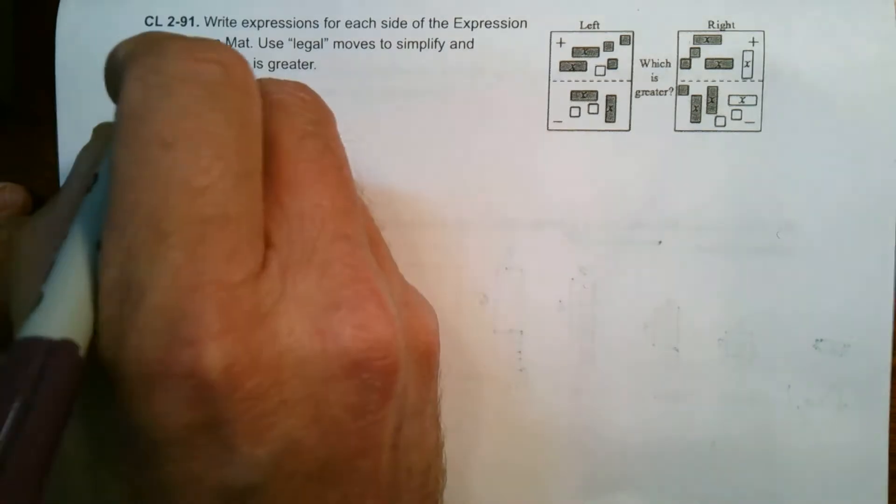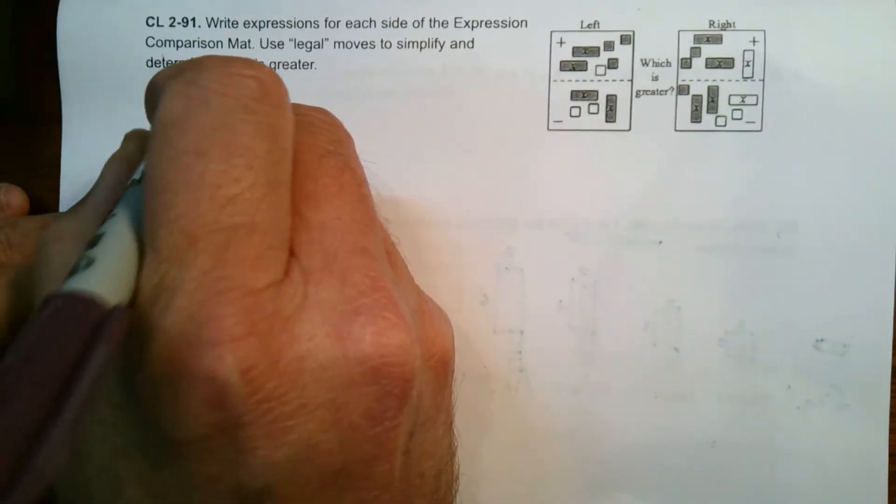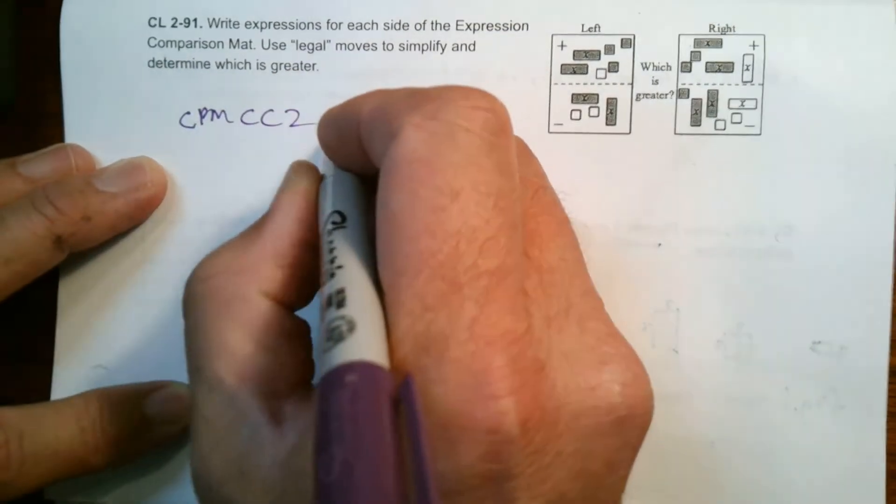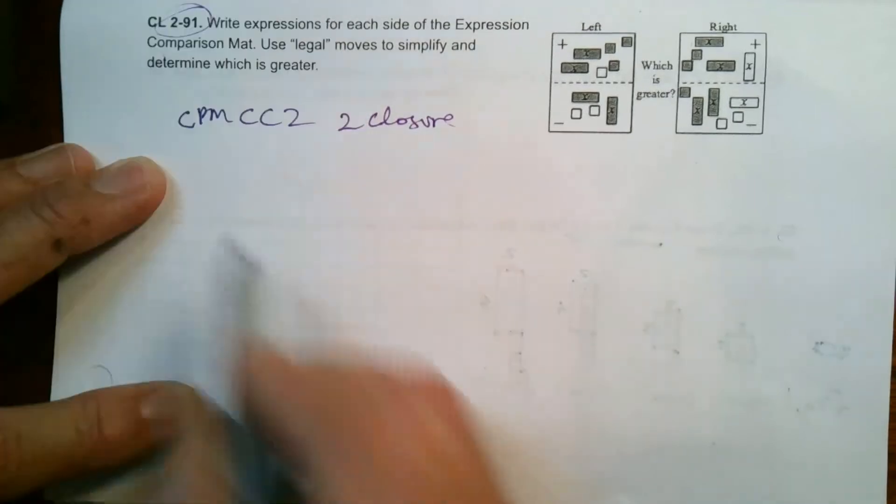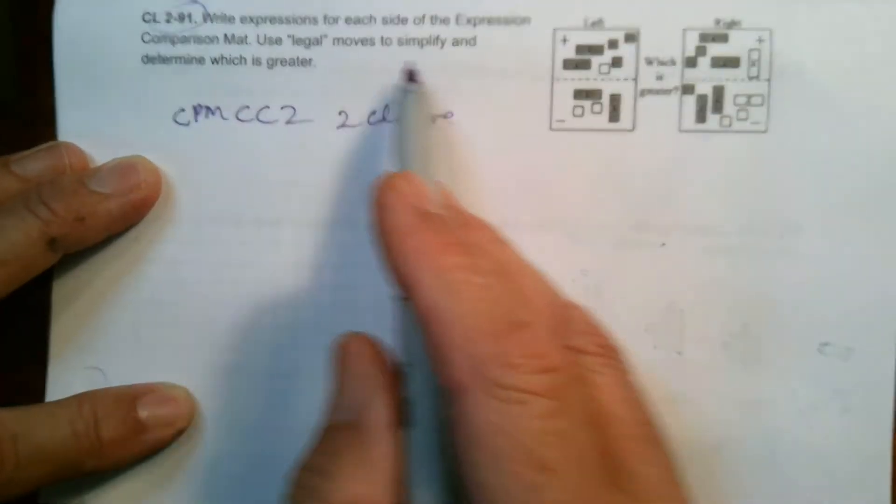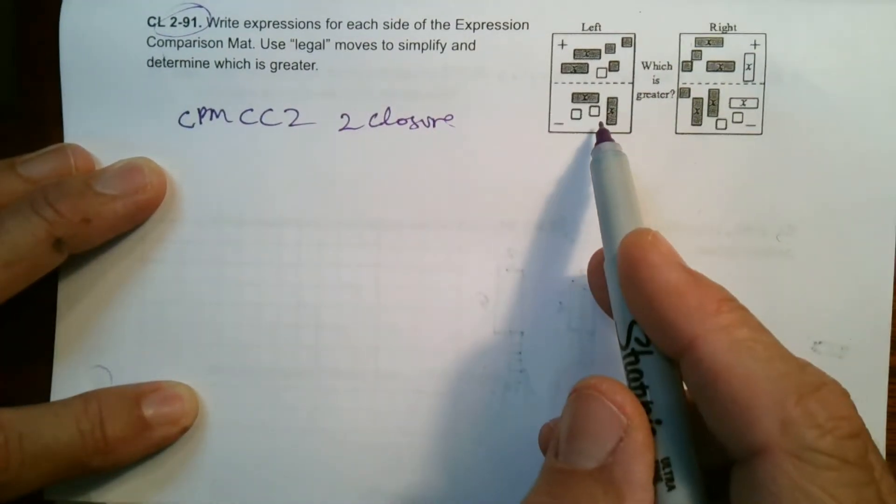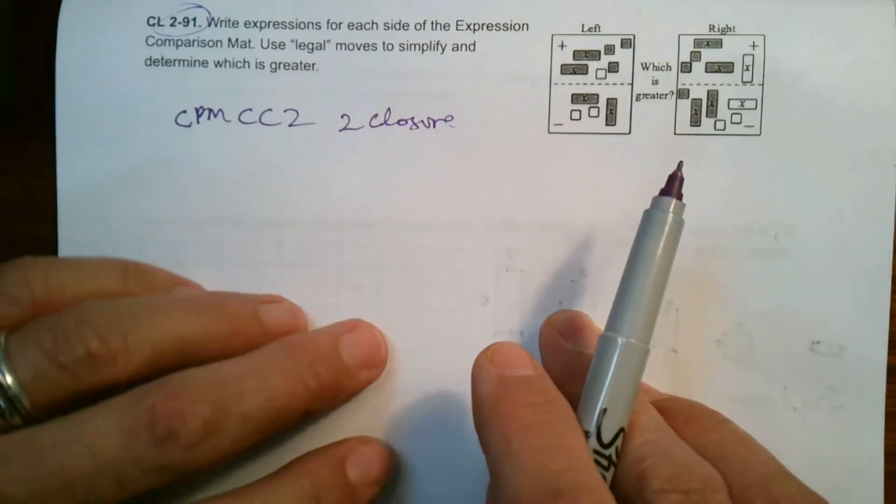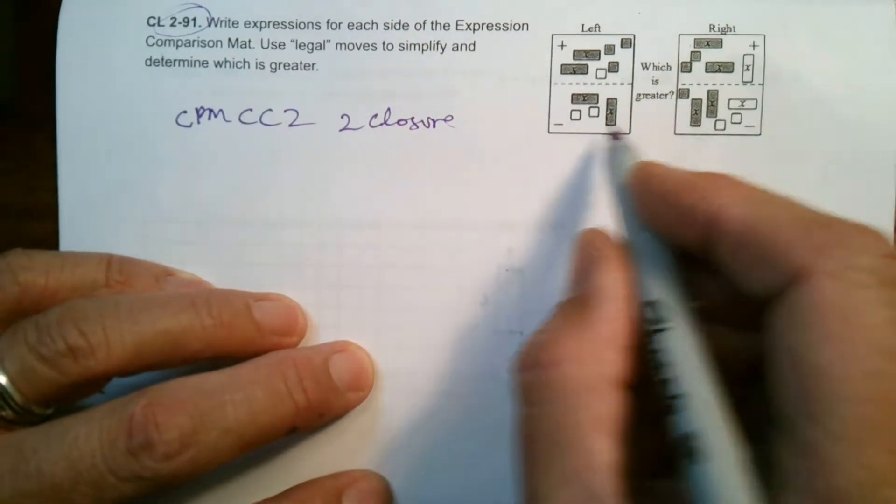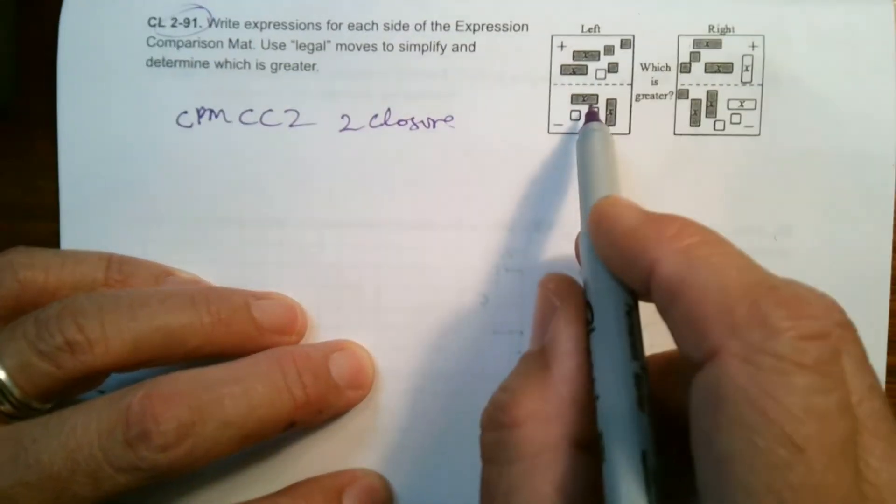So I'm taking this problem specifically from CPM CC2, Chapter 2 closure, number 291. It says write expressions for each side of the expression comparison mat, and then use legal moves to simplify and determine which is greater. So I'm going to actually first write them as is, write the expressions as is.